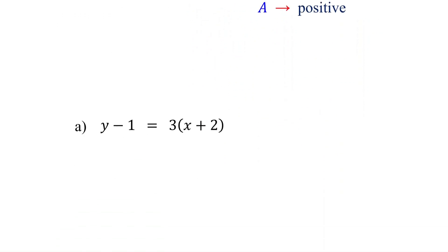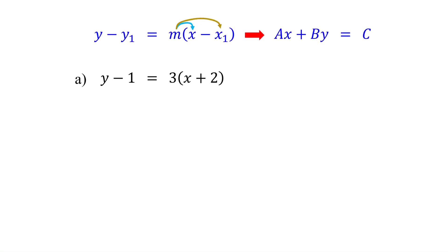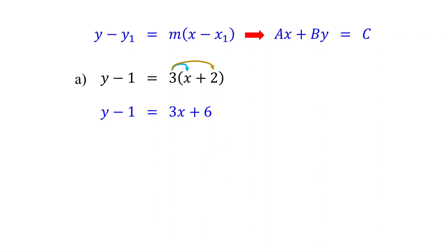Now let's go through our examples to see how to make this conversion. The first step is to distribute the slope to each term inside the parentheses. So in this example, distribute the 3: 3 times X is 3X, and 3 times 2 gives us 6.